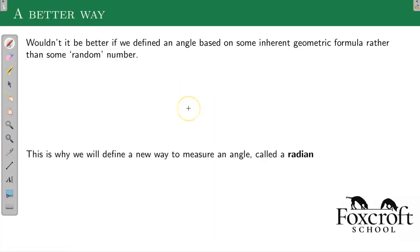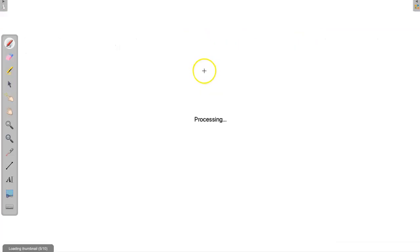All right, so basically the way we're going to do it is using some geometric property of angles and circles to define our angle size. And that's going to be called a radian. All right, so there's a slightly more complex definition for a radian, but we'll use a slightly modified version. So what we're going to do is we're going to have our unit circle again. We use the unit circle a lot for sine and cosine, and we're going to use it again for radians.